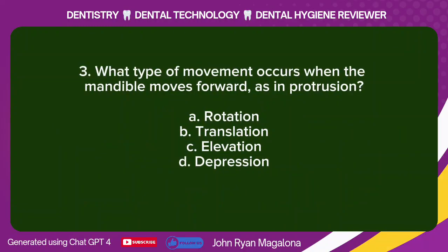Question 3: What type of movement occurs when the mandible moves forward, as in protrusion? A. Rotation. B. Translation. C. Elevation. D. Depression. Answer: B. Translation.